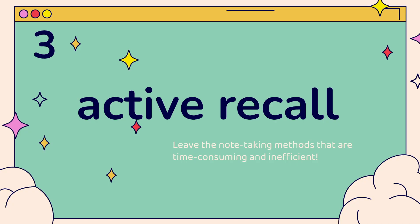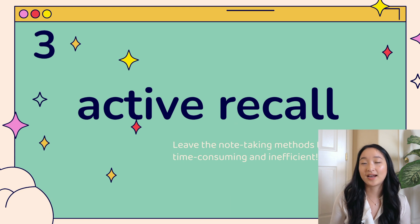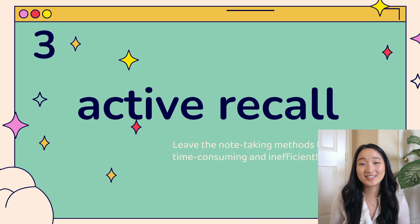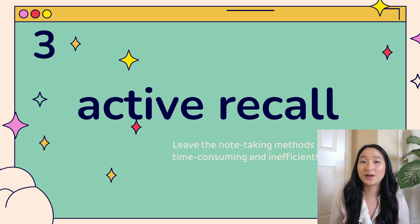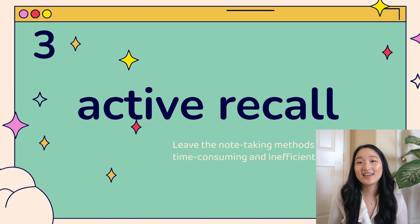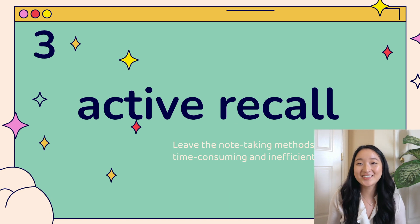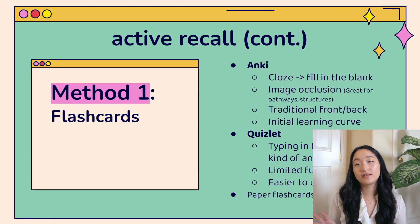Let's get back into tip number three: active recall. At the beginning of my content review for the MCAT, I was writing down handwritten notes. It was excessively time-consuming and I never even read them back, so I realized I needed to change my study method. This is a quick aside: if you notice a study method is not working for you, change it. Don't keep doing it just for the sake of doing it.